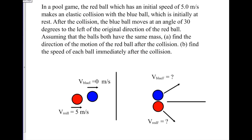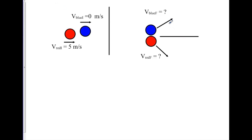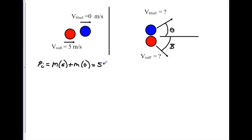Let's start working the problem. We're going to let this angle be theta and this angle be beta. We're going to determine what the initial momentum is. The initial momentum will be the mass of the red ball times 5 plus the mass of the blue ball times zero, giving an initial momentum of 5m. With conservation of momentum, final momentum must equal initial momentum if no outside forces are applied. We know the initial motion is only in the x direction.